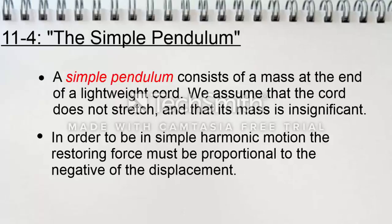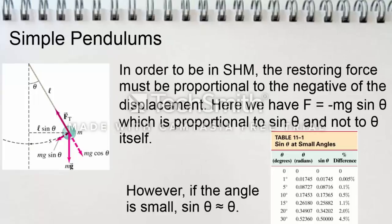Next we have the simple pendulum, which is section 4. A simple pendulum consists of a mass at the end of a lightweight cord. We assume that the cord does not stretch and that its mass is insignificant. In order to be in simple harmonic motion, the restoring force must be proportional to the negative of the displacement. Here we have f equals negative mass times gravity times sine theta, which is proportional to sine theta and not to theta itself. However, if the angle is small, sine theta is equal to theta. This figure here is a free body diagram of a simple pendulum.